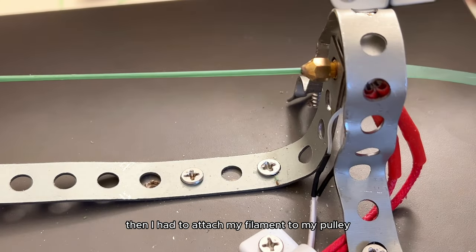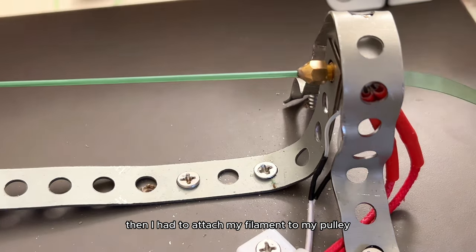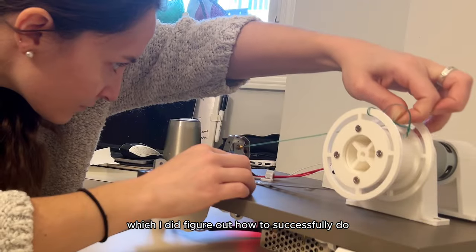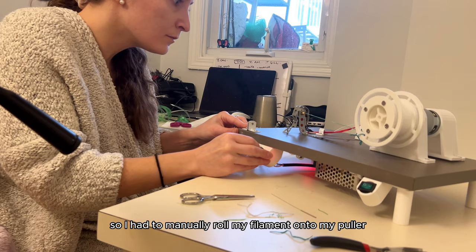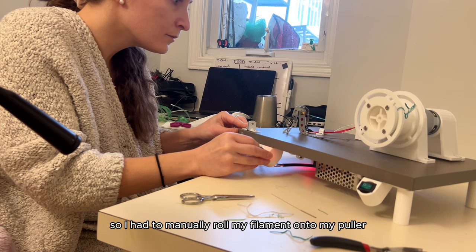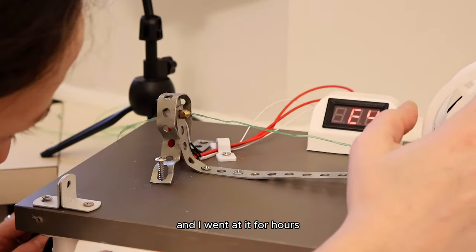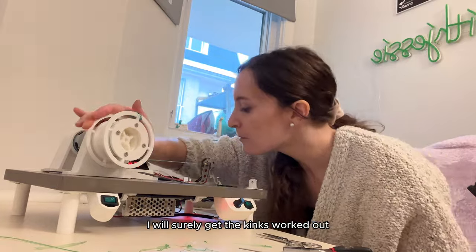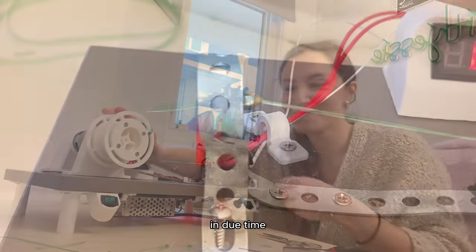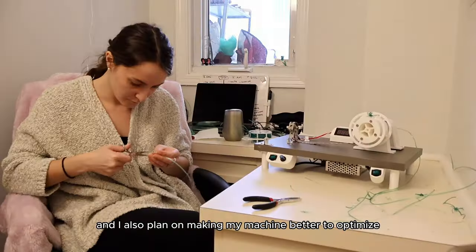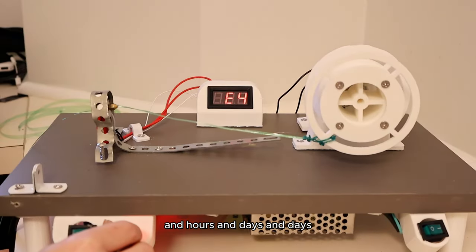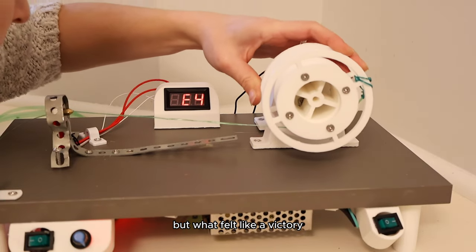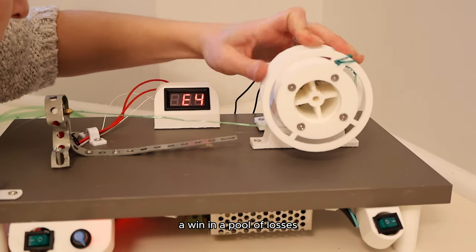But it was not over yet. Then I had to attach my filament to my pulley which I did figure out how to successfully do, but my pulley wouldn't work properly so I had to manually roll my filament onto my puller. I went at it for hours. I will surely get the kinks worked out in due time and I also plan on making my machine better to optimize the automatic performance of it so I don't have to do this all by hand for hours and hours and days and days.